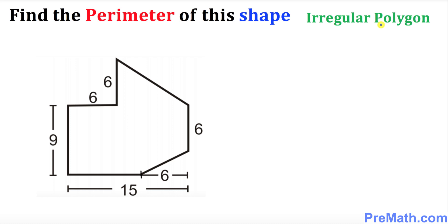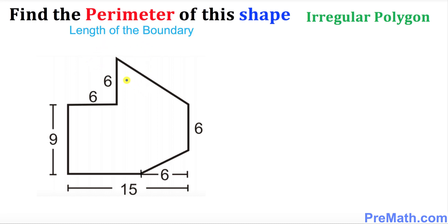One more thing — this perimeter could also be called the length of the boundary of this given shape. All right, so let's go ahead and get started to figure out the perimeter. Let's focus on the individual sides.